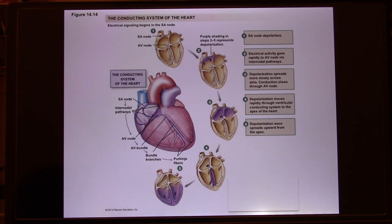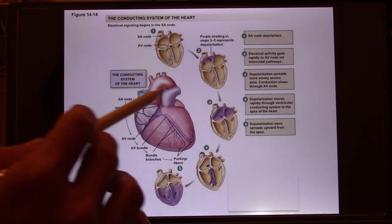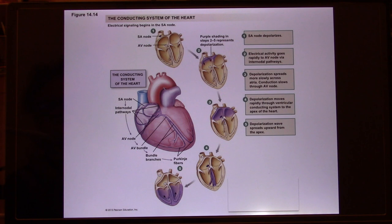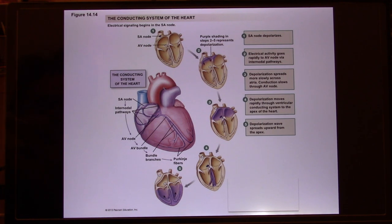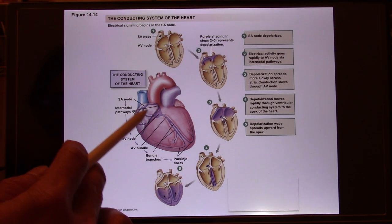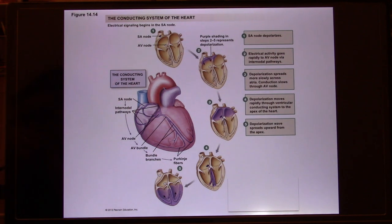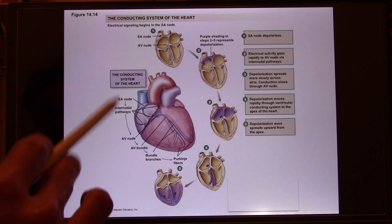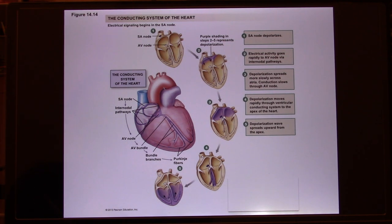Now let's look at the overall picture. We've finished the molecular level. Overall, the heart is the heart, and those pacemaker cells are able to spontaneously generate action potentials. Those pacemaker cells stay together — you have the SA node, AV node, internodal pathway, bundle of branches, and Purkinje fibers. All of these are pacemaker cells, and their firing rates are different.